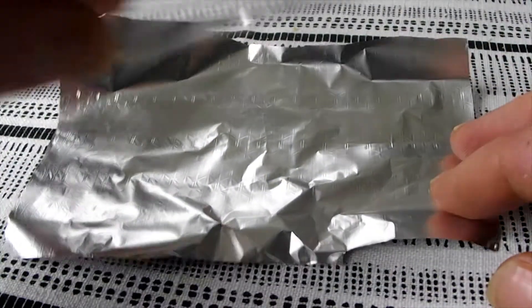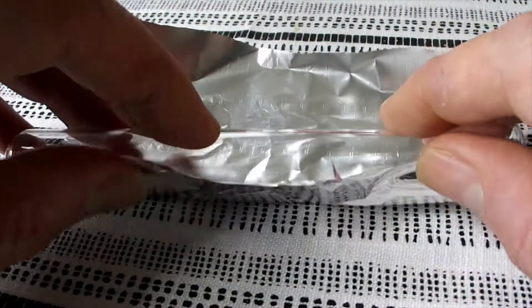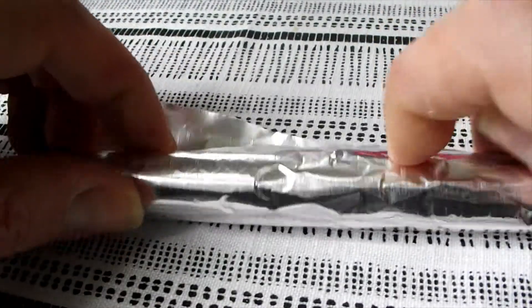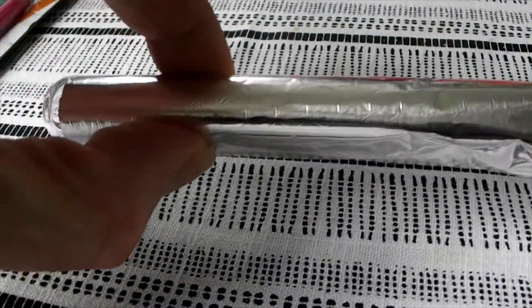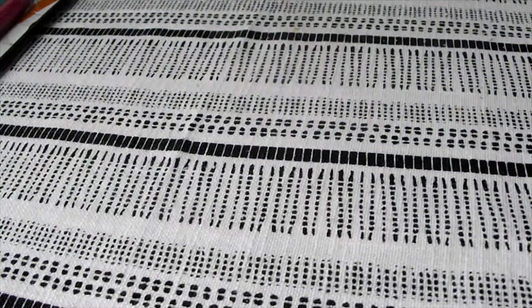Foil. Just normal kitchen foil. And this is for wrapping your test tube to keep it dark. And as you've seen when I was feeding, the foil easily slides on and off. So you just pull it back when you need to access.